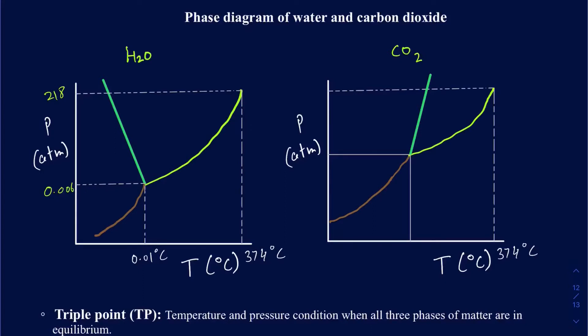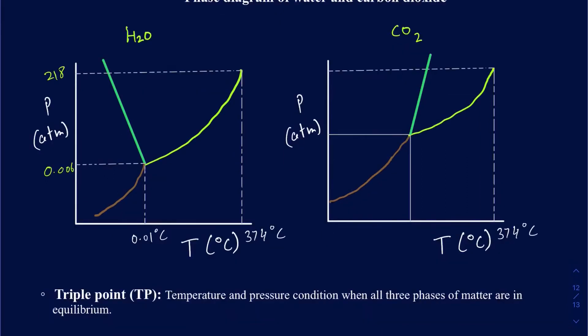There are some differences between the phase diagrams of water and carbon dioxide. We have temperature on the x-axis, measured in degrees Celsius, and pressure on the y-axis, measured in atmospheres. There are three segments in this particular curve — segment 3 is the gas phase, segment 2 is the liquid phase, and segment 1 is the solid phase.